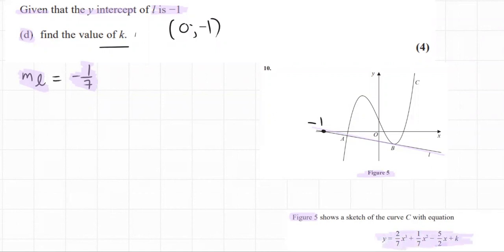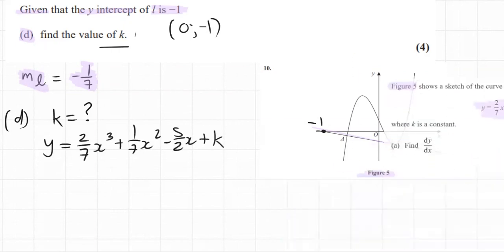So number D is saying, what is k? We write this in first. So y equals 2 over 7x³ plus 1 over 7x² minus 5 over 2x plus k. That's the k they're talking about.